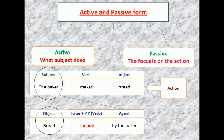Another example: in the active, we say what the subject does. The subject here is 'the baker,' the verb is 'makes,' and the object is 'bread.' The passive focuses on the action, and we say: 'Bread is made by the baker.' The rule for passive is: object + verb to be conjugated + past participle. Because 'make' is in the present, 'to be' must also be in the present — in each tense, 'to be' must be conjugated accordingly.